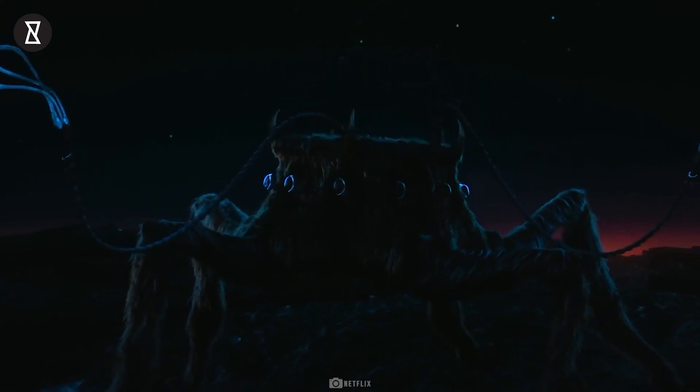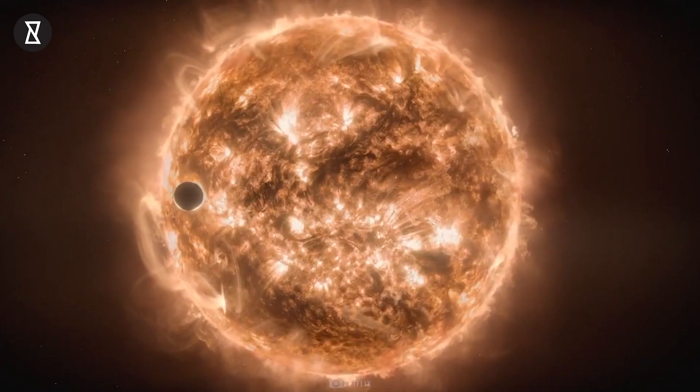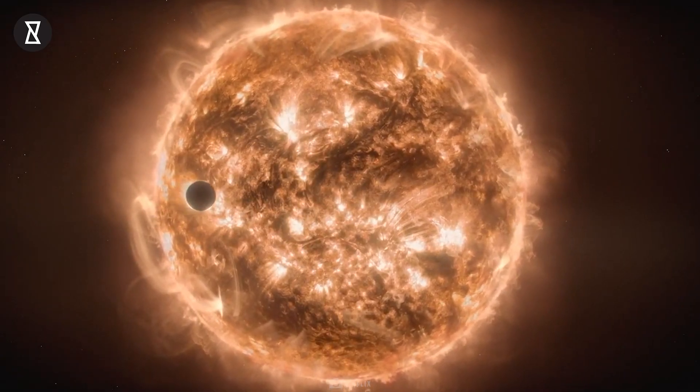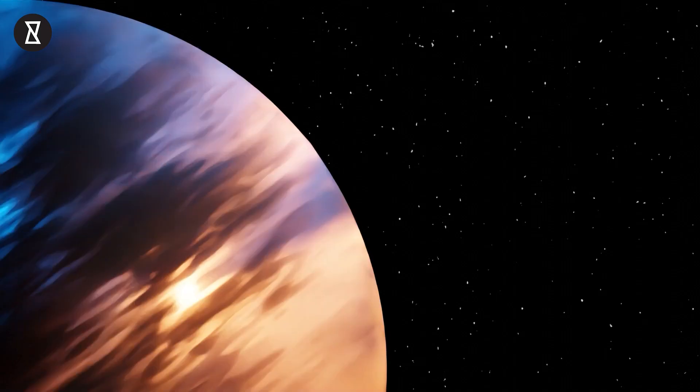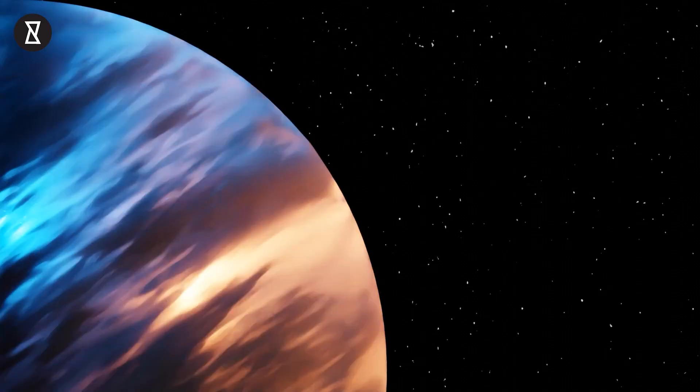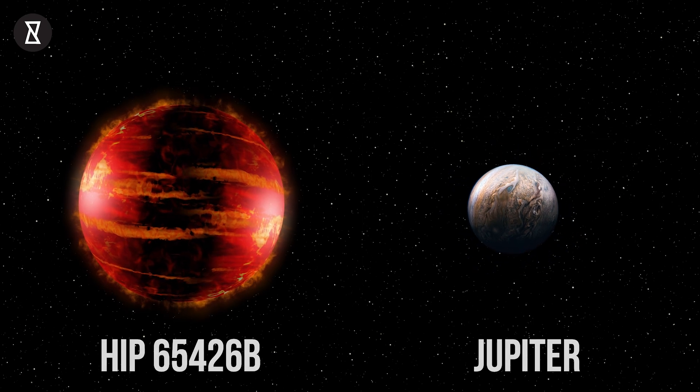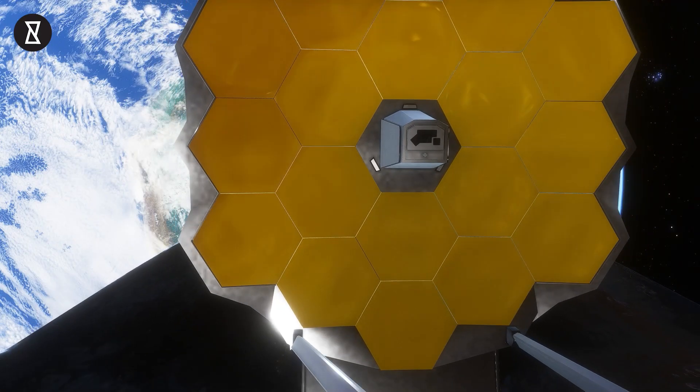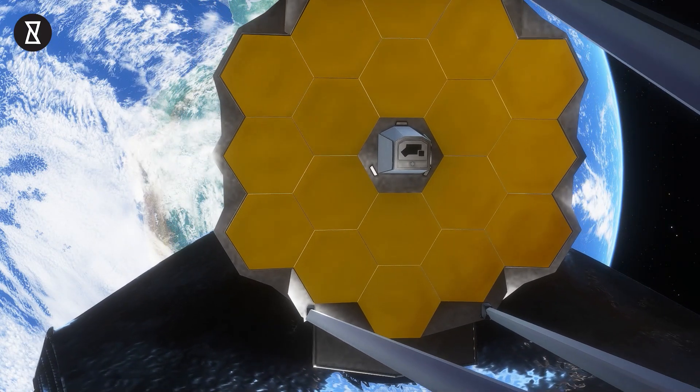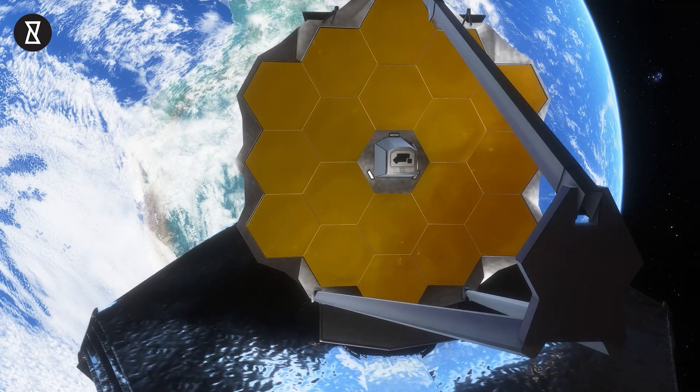Did you ever wonder what an alien world would look like? A star system, planets like Earth and Mars orbiting its star, or a gas giant the size of Jupiter? Or wait, how about a planet that is seven times bigger than Jupiter? Well, the James Webb Space Telescope has just returned its first ever picture of just that.